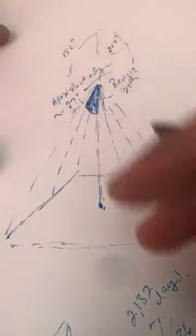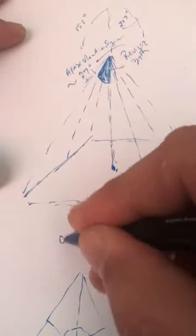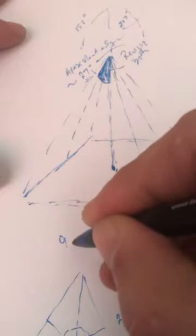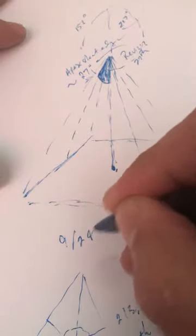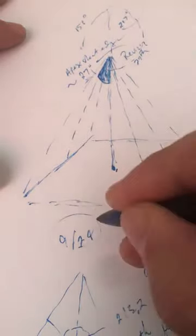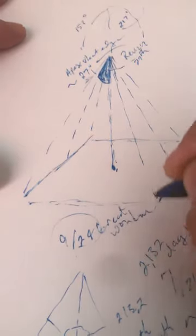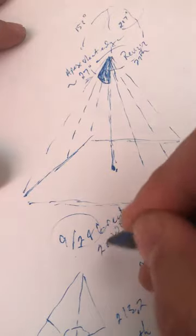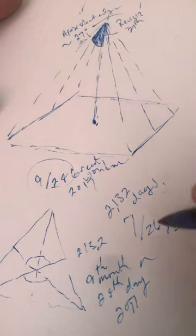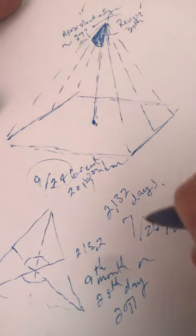We look at Haggai chapter 2 talking about the seed in the barn, ninth month 24th day, and that's when the great wonder occurred in Jerusalem in 2017. Now you go 2132 days forward, which is July 26th, 2023 when it starts.